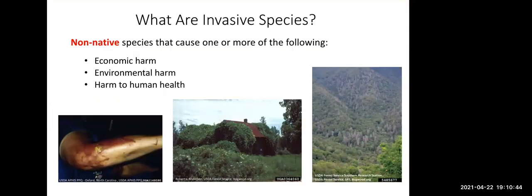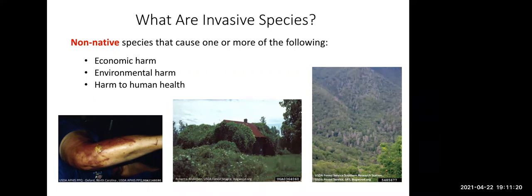Let's start by defining what invasive species are, since there seems to be some confusion about that in the general public. Invasive species are always non-native species. Native species that become overpopulated generally do so because controls of their population have been removed due to anthropogenic disturbance — for example, white-tailed deer overpopulation and the removal of wolves. Invasive species are invasive because they've not evolved within the context of our ecosystems and native species, so they generally don't have any natural pests or pathogens that cause disease. Not all non-native species are invasive. To be considered invasive, a species must have shown to do economic harm, environmental harm, or harm to human health.